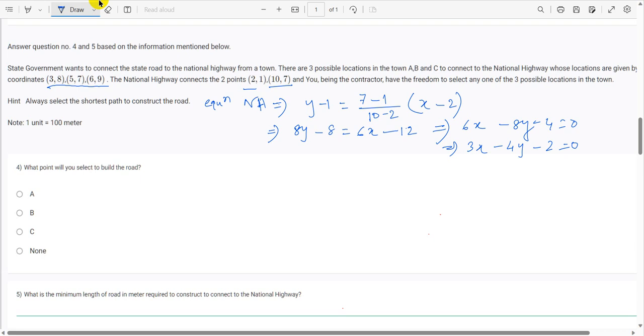Now to select the shortest path to construct the road, we have to find the distance of these three points A, B, C from this line. Now to find the distance of point A from this line, we know the formula. Distance between a line and a point. So, national highway and point A.